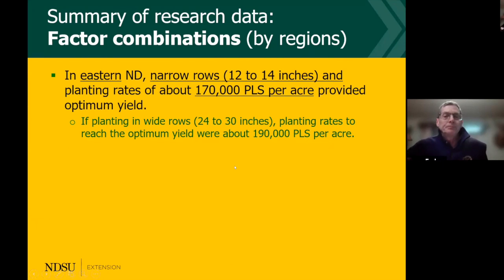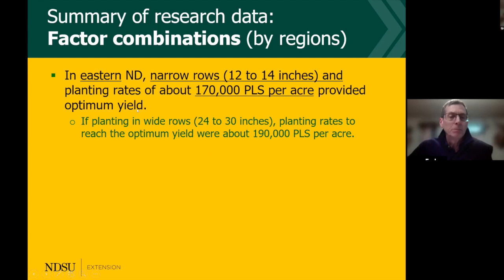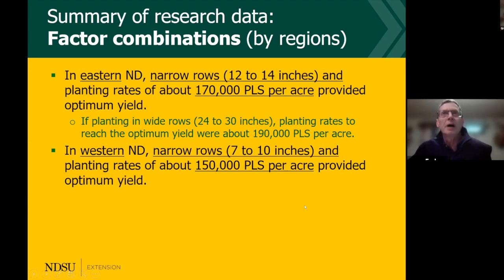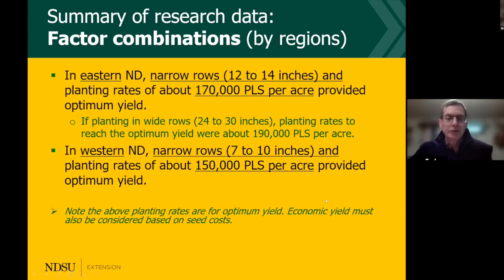In the eastern part of the state — essentially from Carrington eastward to the valley — narrow rows were better: 12 to 14 inches compared to wide rows. The planting rate that optimized yield was 170,000 pure live seeds per acre. In the west, from Rugby westward, narrow rows again won, with 7 to 10-inch rows performing better. The optimum planting rate there was 150,000 pure live seeds per acre. Note these are optimum yields, not economic yields — you'll need to adjust based on seed and market prices.